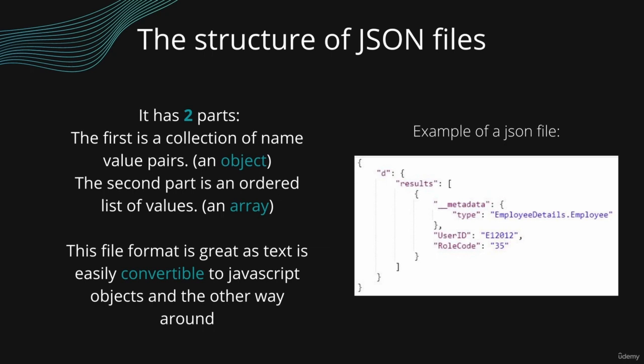When exchanging data between a browser and a server, that data can only be text, and JSON is text. This way we can easily convert any JavaScript object into JSON and send that JSON to the server or the client. We can then work with the data as JavaScript objects with no complicated parsing and translations. If you receive data in JSON format as a client from the server, you can easily convert it back into a JavaScript object, so it works great the other way around too.